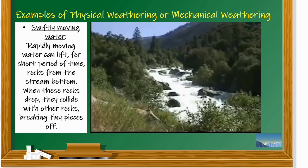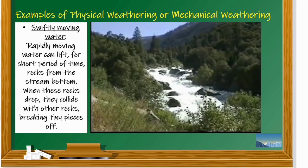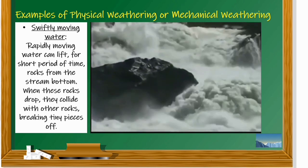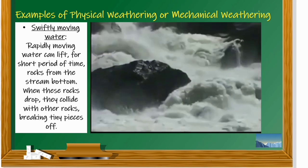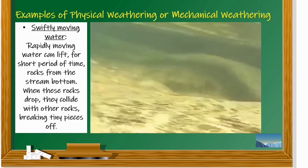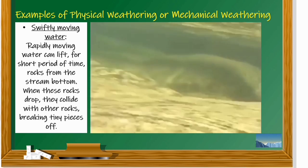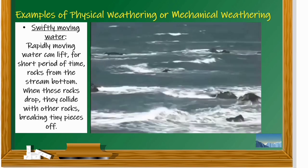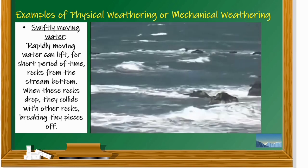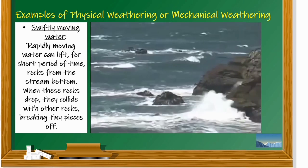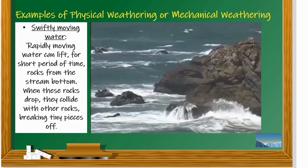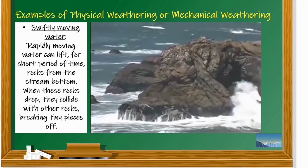Here are examples of physical weathering, or mechanical weathering. Swiftly moving water: rapidly moving water can lift rocks from the stream bottom for a short period of time. When these rocks drop, they collide with other rocks, breaking tiny pieces off.